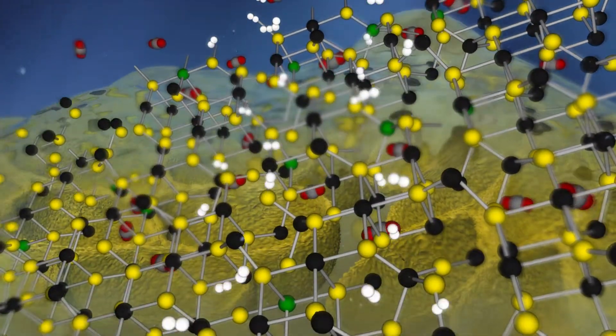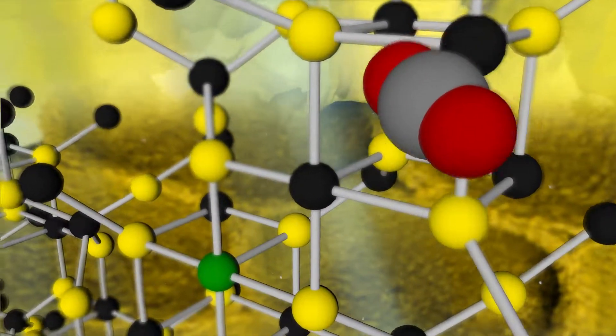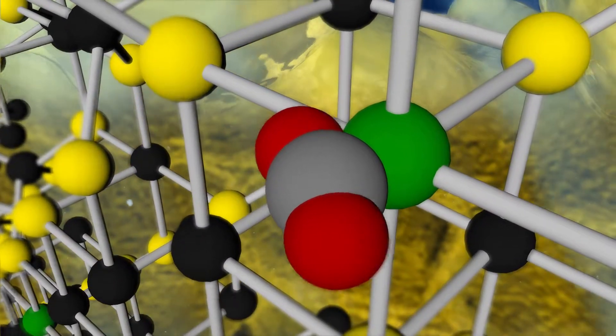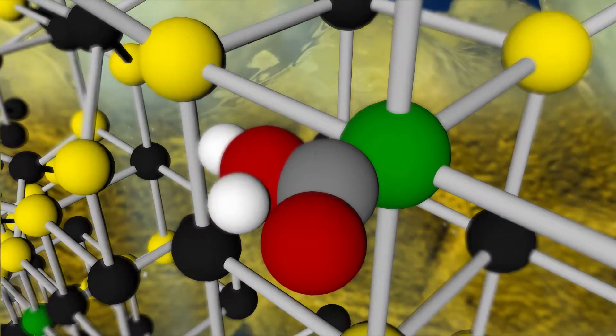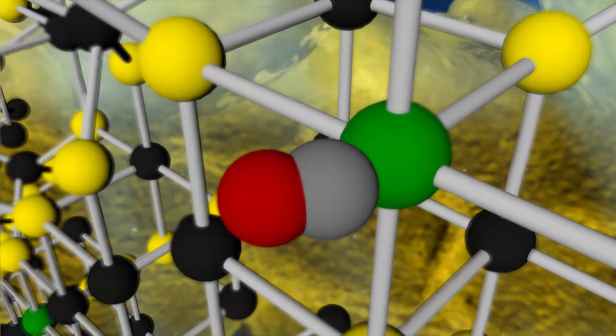Modern microbes that live in the Earth's crust fix CO2 using nickel. Schematically, CO2 binds nickel and is reduced by hydrogen to generate a nickel-bound carbonyl. In the next step, a chemically accessible methyl group binds the same nickel atom.